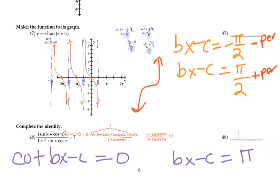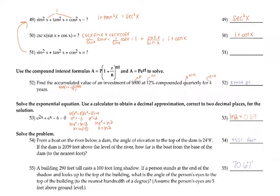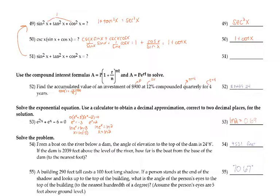Number 48 starts verifying trig identities — make sure you review your reference sheet. For this one, expand the top by FOILing, ending up with sine squared plus cosine squared plus 2 sine cosine. Sine squared plus cosine squared becomes 1, so you get 1 plus 2 sine cosine. For 49 and 51, combine sine and cosine to make 1, and remember 1 plus tangent squared is secant squared. For number 50, distribute cosecant — which is 1 over sine — to each term. The sines cancel on the first term, giving 1 plus cosine over sine, which is 1 plus cotangent.